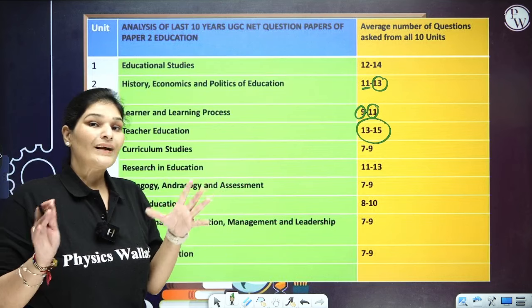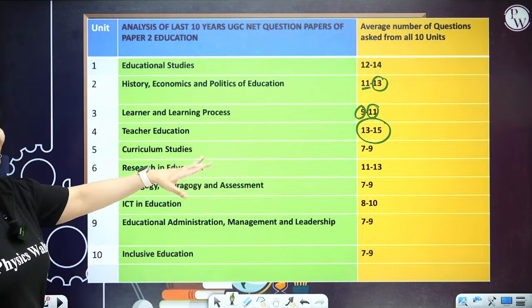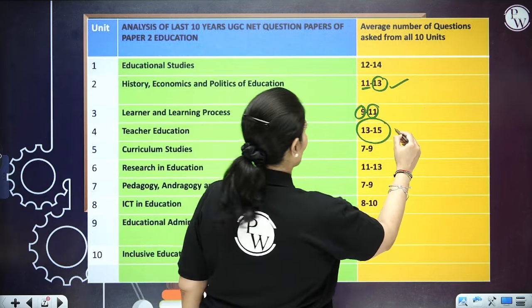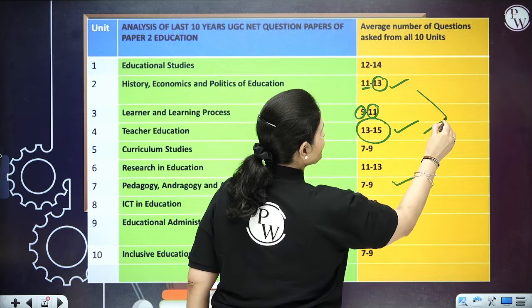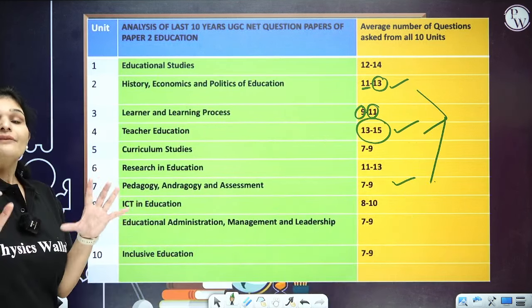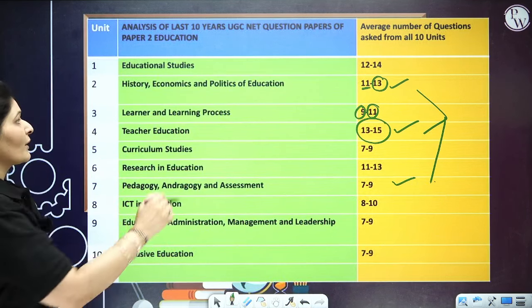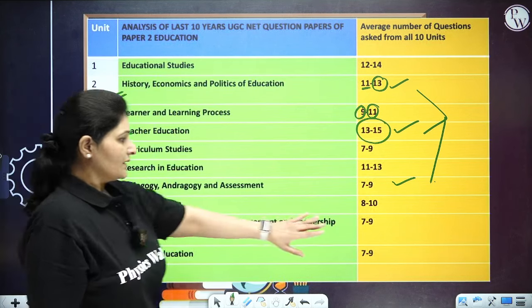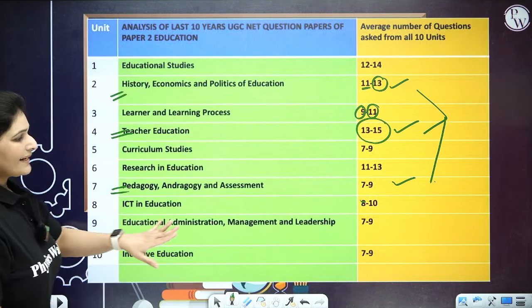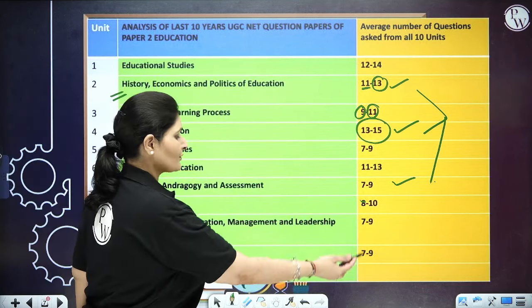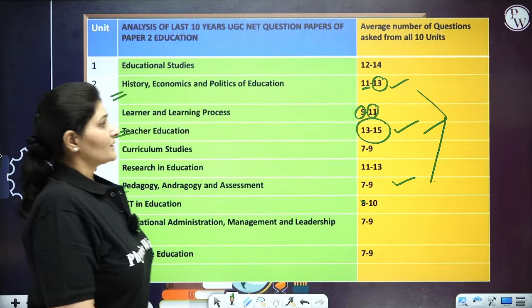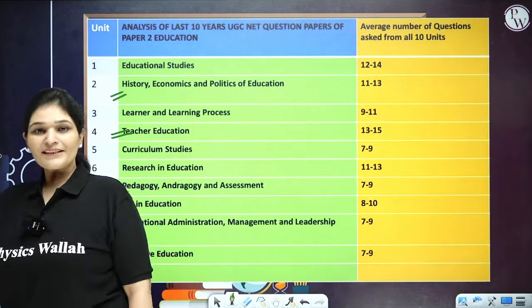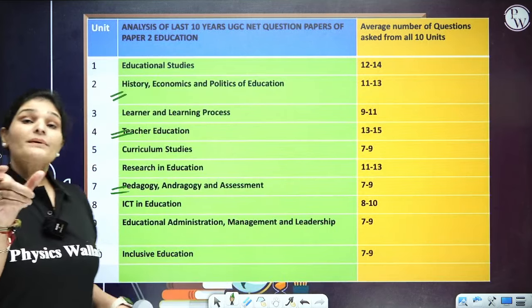Unit 7 (Pedagogy) — 7 to 9 questions. History, Teacher Education, and Pedagogy/Andragogy are interrelated, so together they can account for 25 to 30 questions. Unit 8 (ICT/Technology in Education) — 8 to 10 questions. Unit 9 — 7 to 9 questions. Unit 10 (Inclusive Education) — 7 to 9 questions. What we learn from this research data is that certain units deserve more focused study time than others.